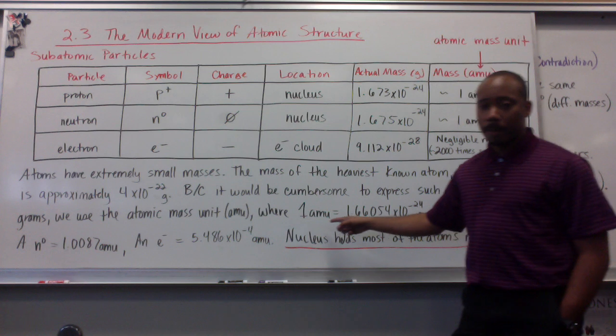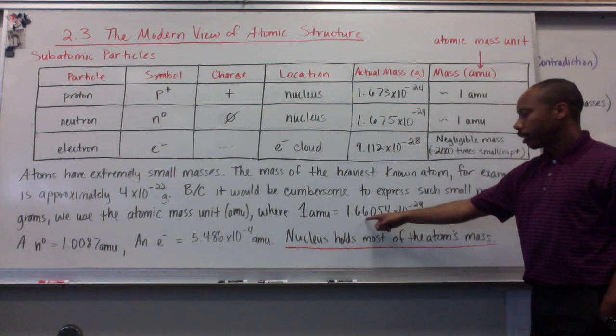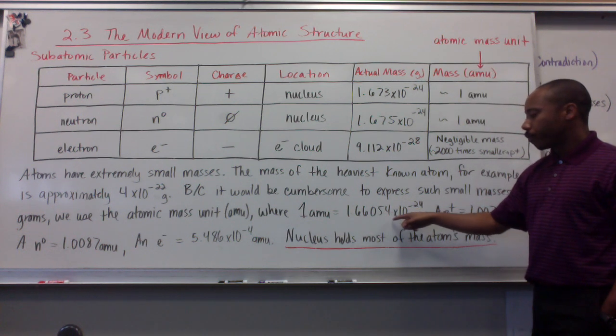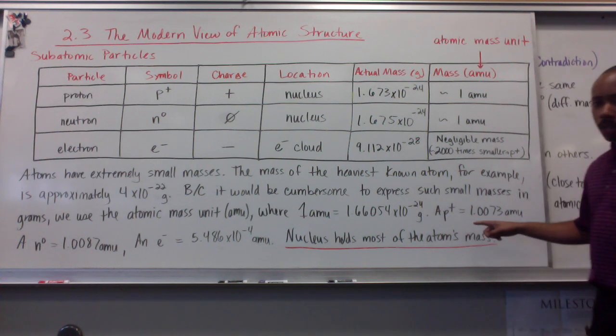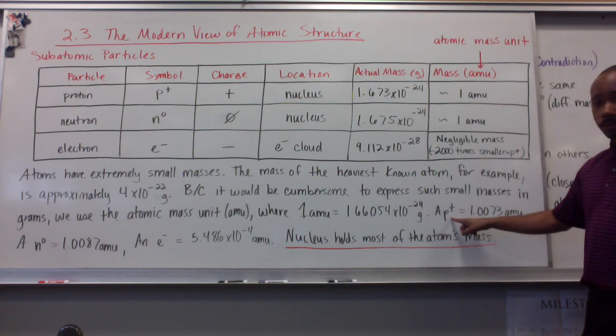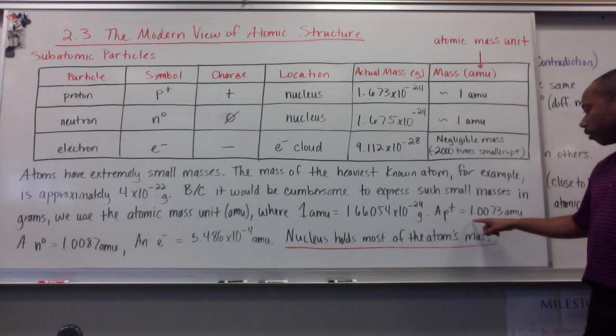Where one atomic mass unit equals 1.66054 times 10 to the negative 24th grams. One proton, for example, would equal 1.0073 atomic mass units.